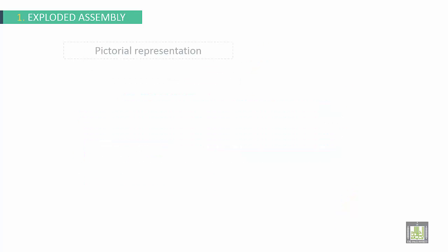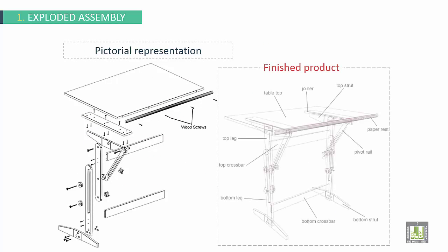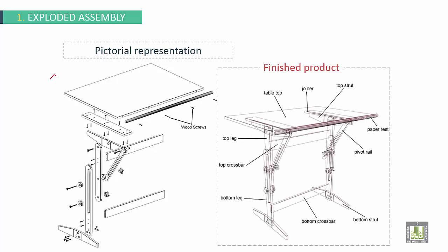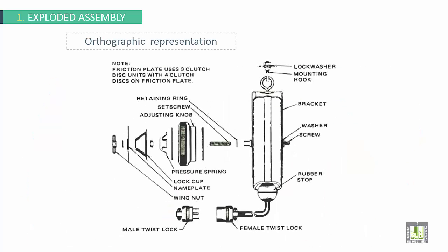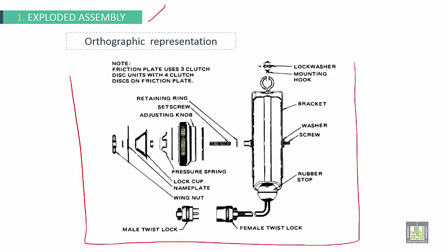Here we have for exploded assembly one example. Here it is exploded assembly for all parts to show all parts exploded. And here we have the finished product. Another example for exploded assembly here. All parts are here, not assembled but exploded and ready to be assembled.